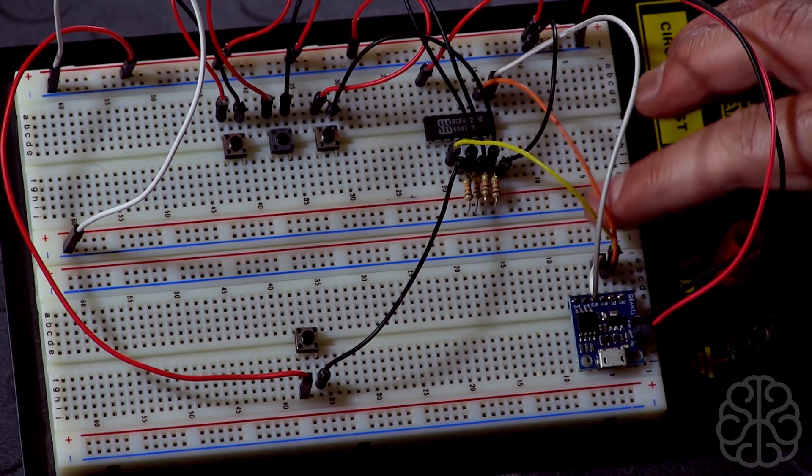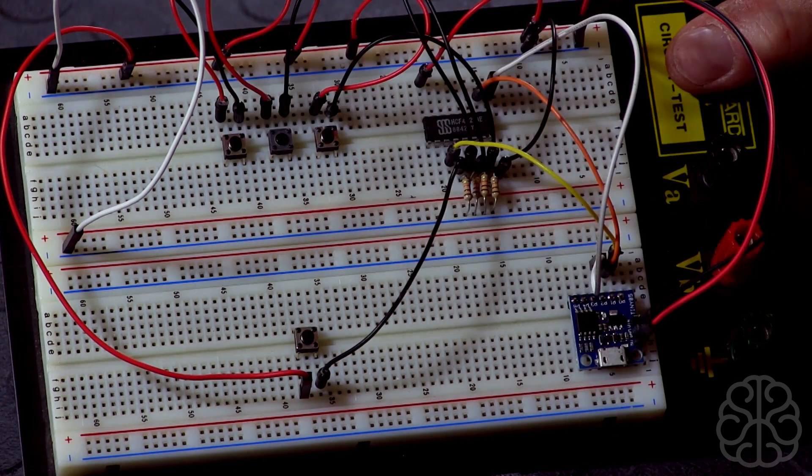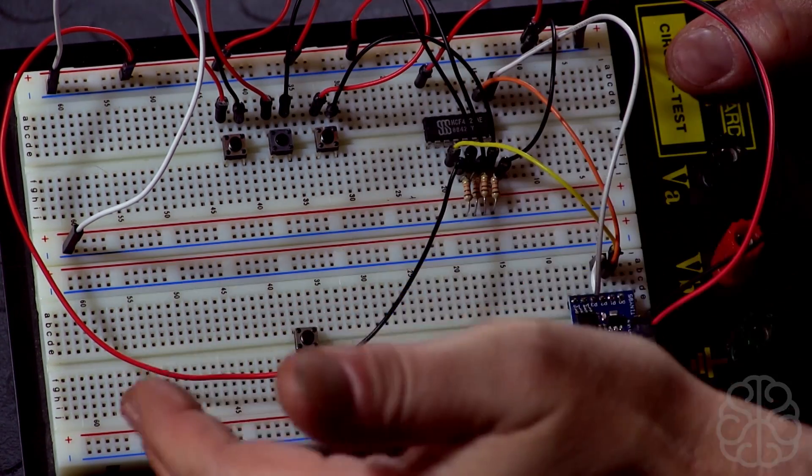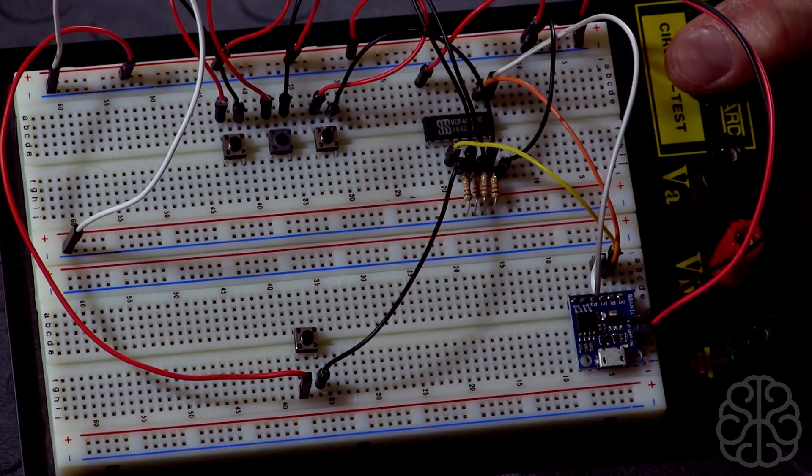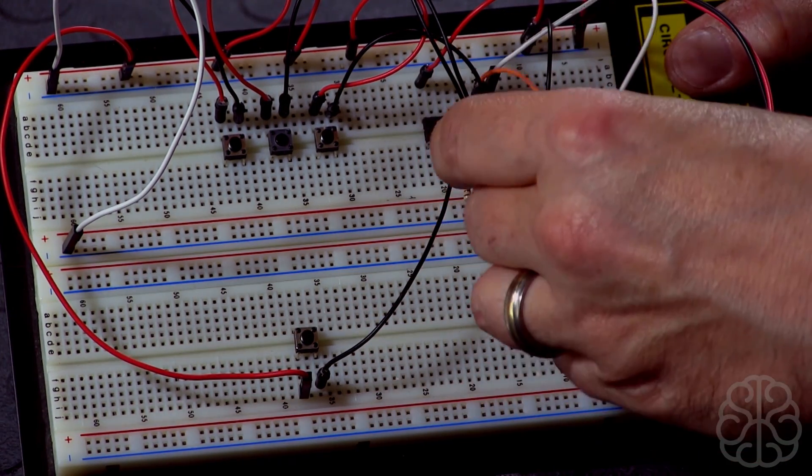I'm only using three pins on my DigiSpark to read up to eight buttons. If you need more, you can always connect these guys in parallel, so you could have up to 16 if you use two of these and still use only three pins.